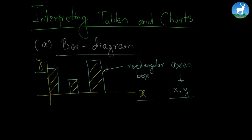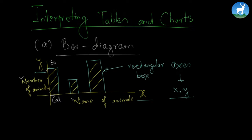So we have two axes, namely x and y, and the information is presented in a rectangular form. So what we have here is a rectangular box. The first kind of information given in your book is the name of the animals on the x-axis and the number of the animals on the y-axis.